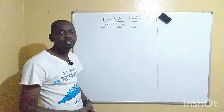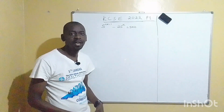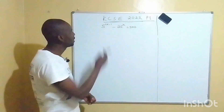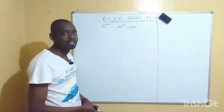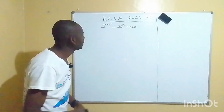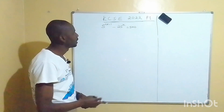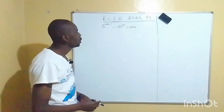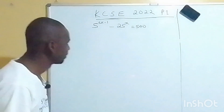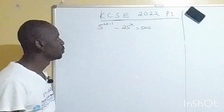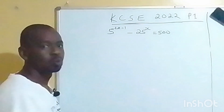Hello everyone and welcome back to our YouTube channel. This is Mathematics with Engineer Apps. Today we have a certain challenge: this is KCSE last year paper one, and the question goes — five power two x minus one, and you subtract 25 power x, is equal to 500.